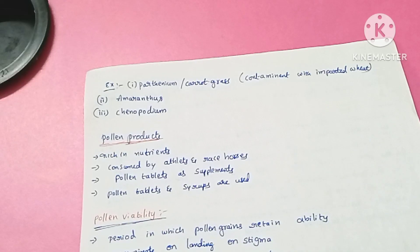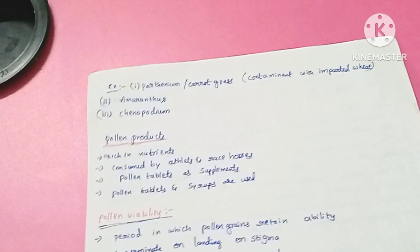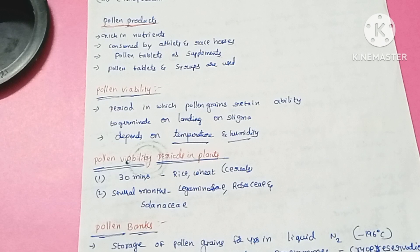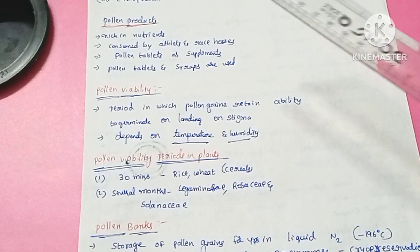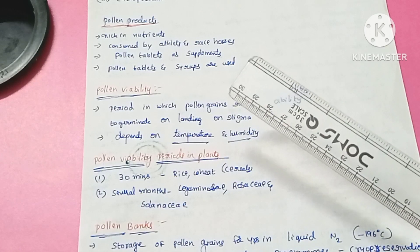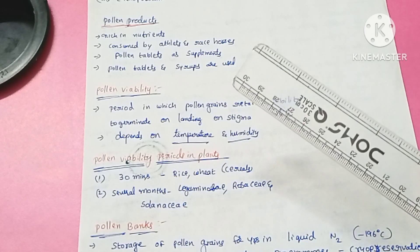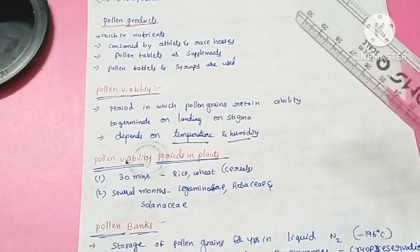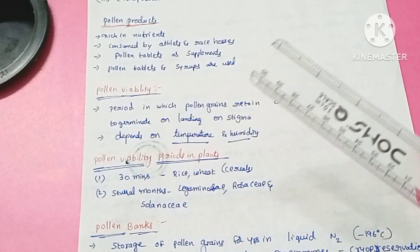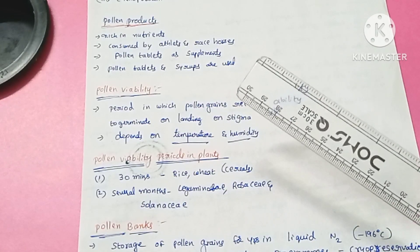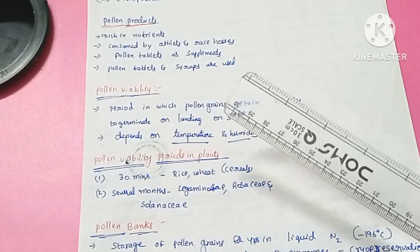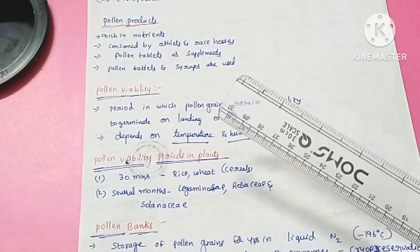Pollen grains are used as a food supplement. Many people use pollen grains as food supplements because they are rich in nutrients. Pollen consumption has been claimed to increase performance. It is mostly consumed by athletes, and pollen grains are also fed to racehorses to improve their performance.